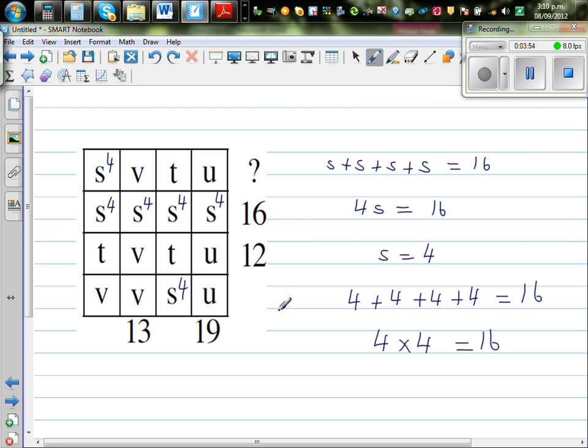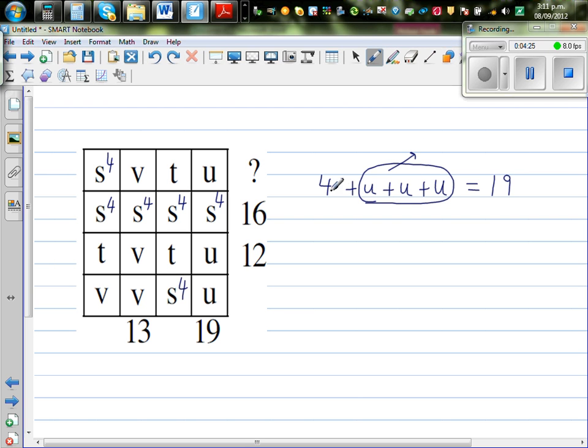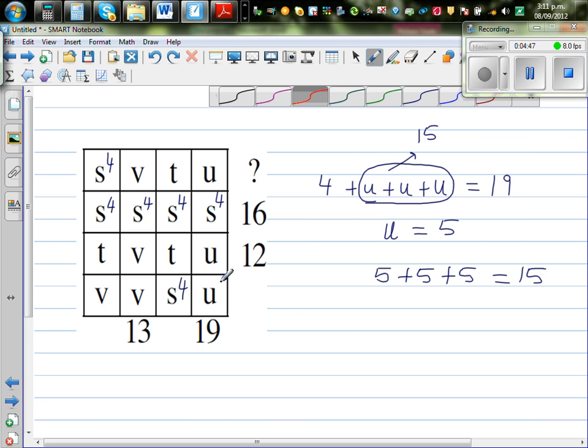So the rest I think would be much easier. You can take your own time, pause the video and try to do this yourself. Let us look at vertically. So this is 4 plus u plus u plus u is 19. So think about logically, this has to be 4 plus what is 19. So 4 plus 15 is 19. So u is equal to 5, because I know 5 plus 5 plus 5 is 15. So my u, let me use a different color for u. So this is u is 5. So I'm going to write 5 in place of u.